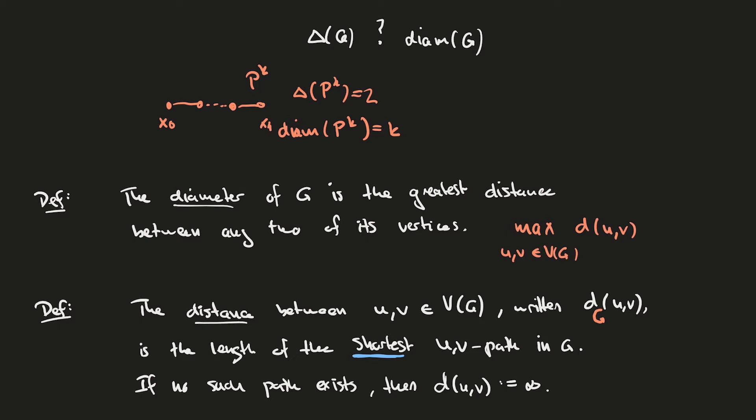There is still the case where the maximum degree is less than or equal to 1. In the case that the maximum degree is equal to 1 then G just consists of paths of length 1 and isolated vertices, and in this case the diameter of such a graph would be at most 1. And if the maximum degree of G is 0 then we just have isolated vertices and the diameter would be 0. So if the maximum degree of G is less than or equal to 1 then we can say something about the diameter, but what we're saying isn't very interesting in those cases.